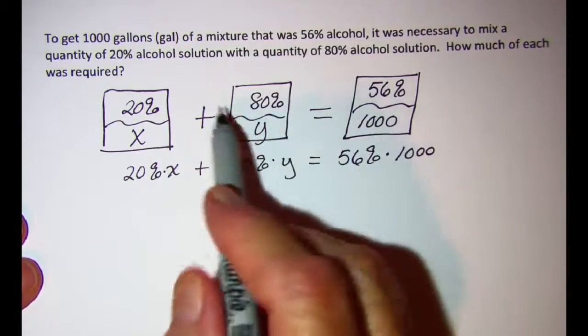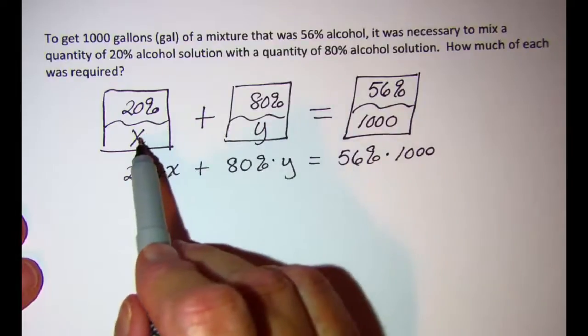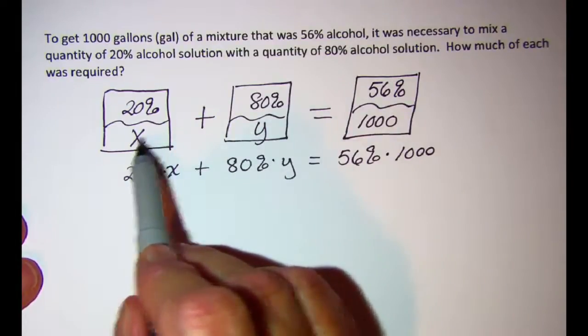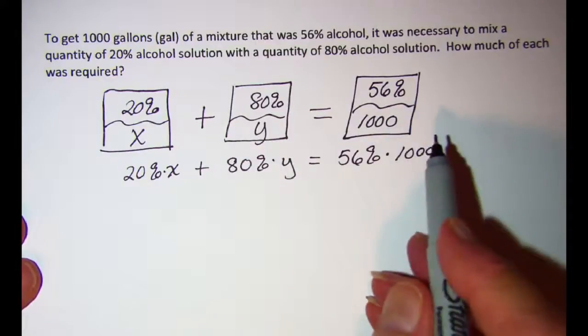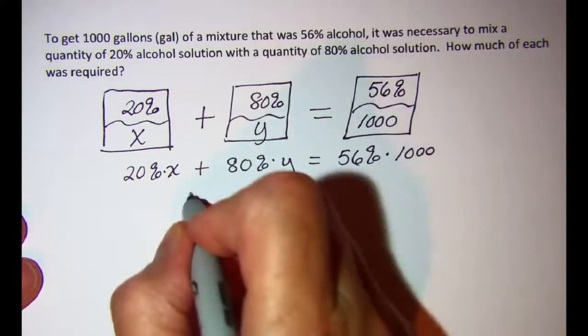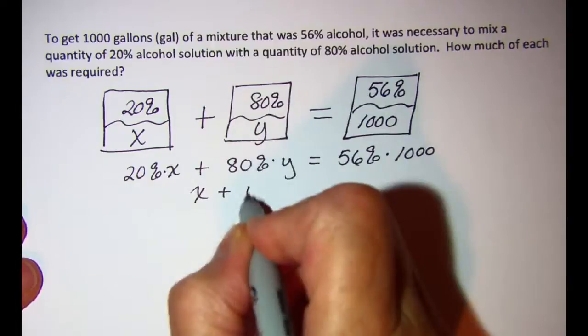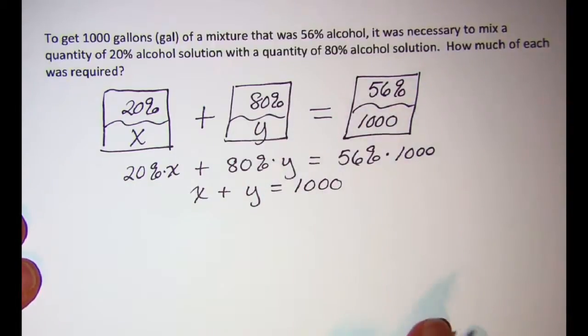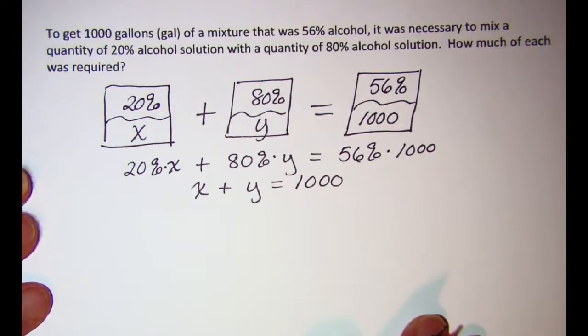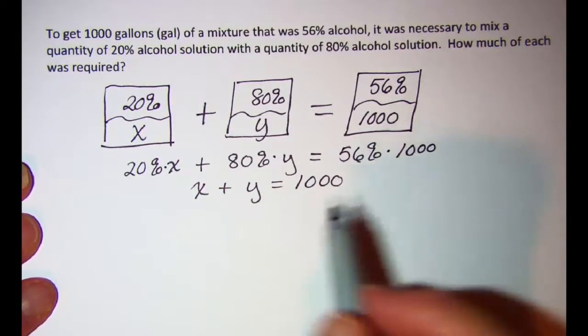And the other equation comes from these quantities: x plus y has to equal a thousand gallons. So there's my two equations. Should be sufficient to solve for the two unknowns.